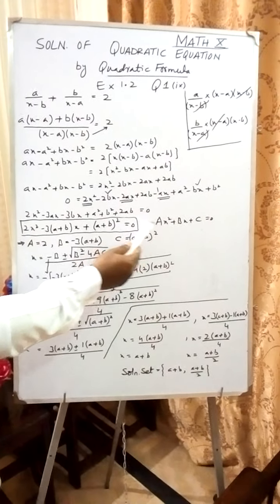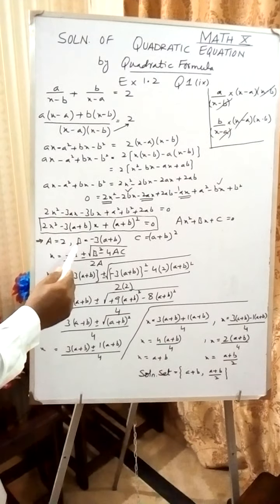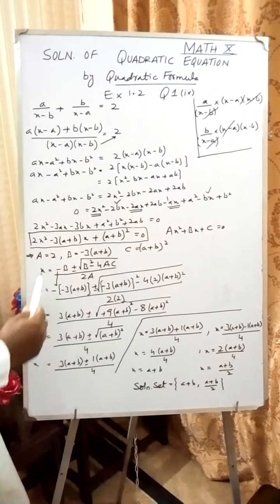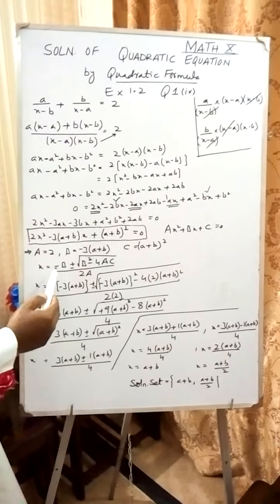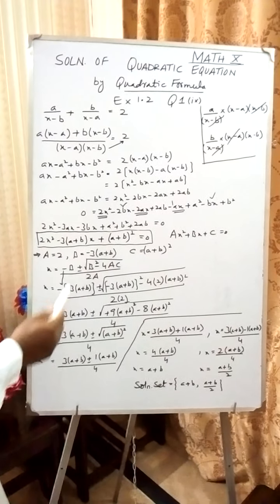So coefficient of x², which is capital A, will become 2. Coefficient of x is B: -3 times (a + b). And C is (a + b)². Now I will write the quadratic formula. As the variable is x, so x equals to [-B ± √(B² - 4AC)] / 2A.